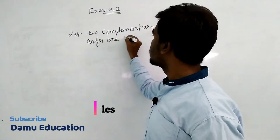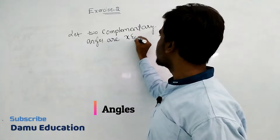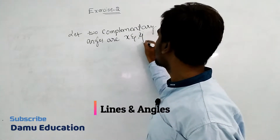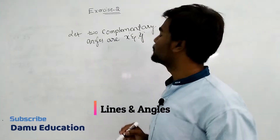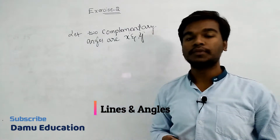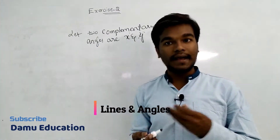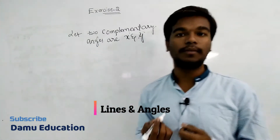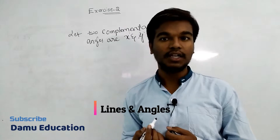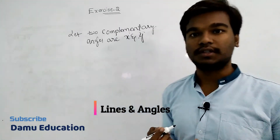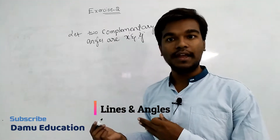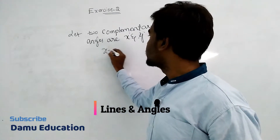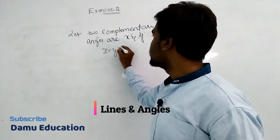Let the two complementary angles be x and y degrees. They are given that the two complementary angles are equal to each other, that means x is equals to y. So x is equals to y degrees.